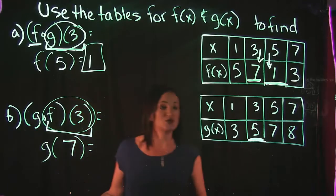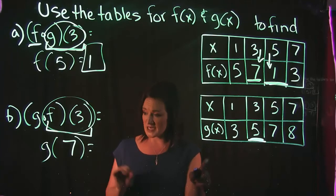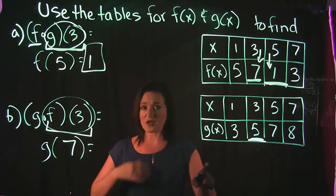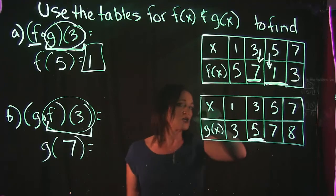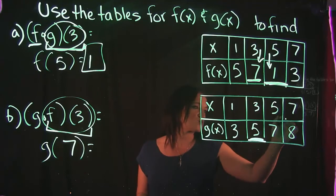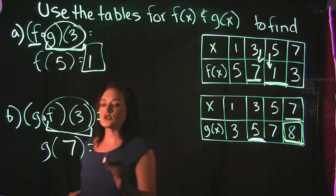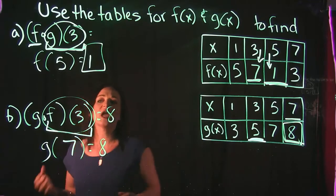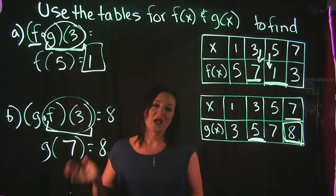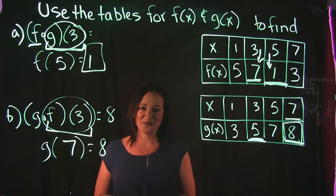Now all we need to do is find g of 7. Go down to the bottom table for g, and look for when the x value is 7. The top row is your x values, so 7 is at the end. When x is 7, y is 8. So g of f of 3 equals 8. That's how composition functions work when you're given a table, and that's it for this video.